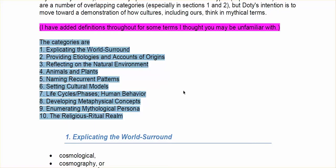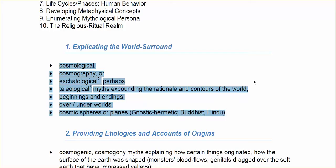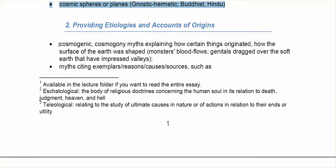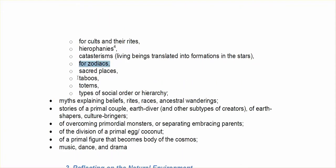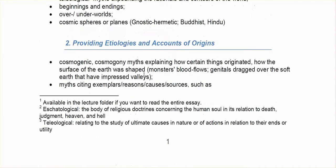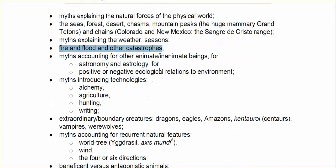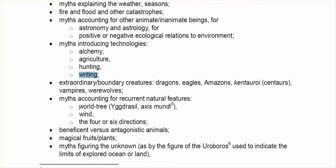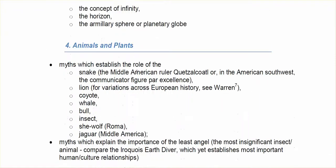And this gives you a set of categories to help you compare them, to look at them side by side in a way that might make sense. Under each one of these categories, Doty has provided a list of things that might appear in that category. So in the category that provides accounts of origin, there might be cosmogonic myths, there might be myths talking about causes and sources for cults, there might be talking about zodiacs, or taboos, or social order. All those topics could show up under his category called providing etiologies and accounts of origins. In myths that reflect on the natural environment, there could be myths explaining the natural forces of the physical world — fire and flood and catastrophes — myths that talk about agriculture or writing, or the world tree, like Yggdrasil in Norse mythology, or the wind.